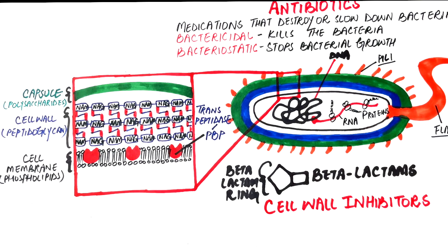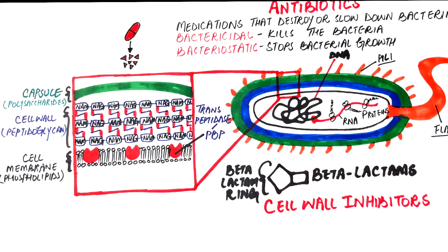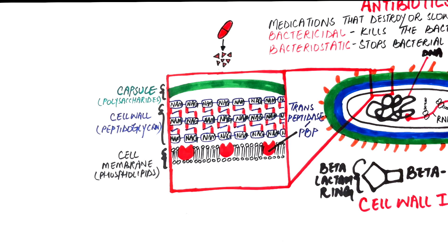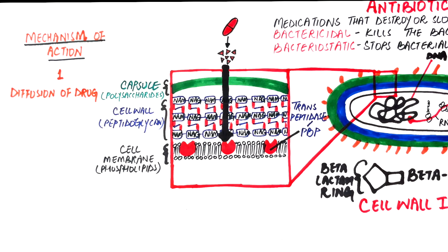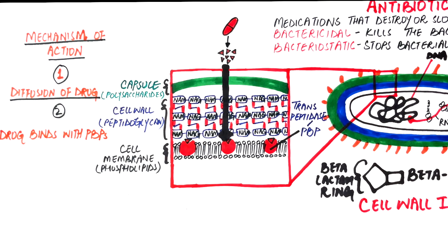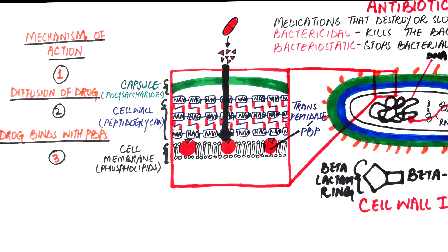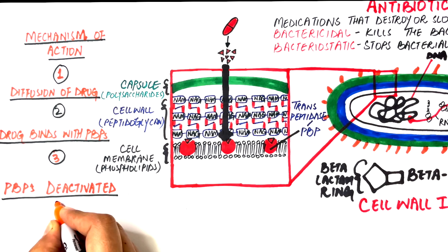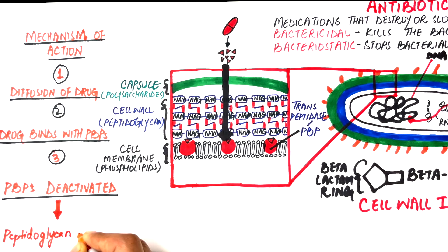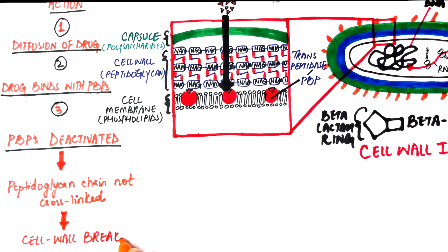Beta-lactams act as bactericidal drugs and they inhibit cell wall synthesis in three simple steps. The drug first diffuses through the bacterial capsule and cell wall, and then binds with the penicillin-binding proteins located at the bacterial cytoplasmic membrane. Once a beta-lactam drug binds to the penicillin-binding proteins, the penicillin-binding proteins are deactivated, hence the peptidoglycan chains cannot be cross-linked. This causes the cell wall to break apart. As a result, water rushes into the bacterial cell through these small breaks in the cell wall and causes the cell to swell and then burst into fragments.